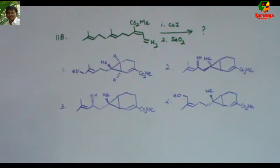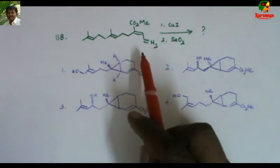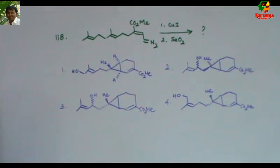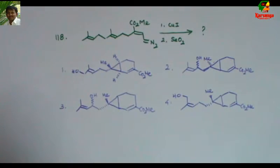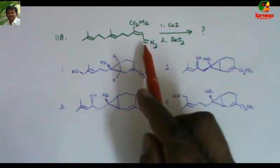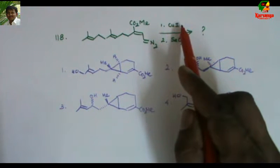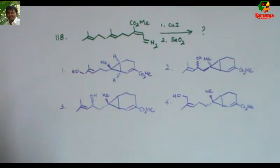Today I am going to solve a problem on intramolecular cyclopropanation of metal carbenoids followed by allylic oxidation using selenium dioxide. Here is the problem: when this diazo compound is treated with copper iodide followed by selenium dioxide, what is the major product?